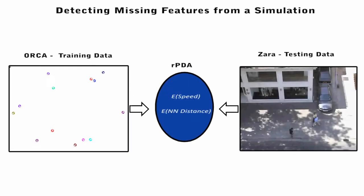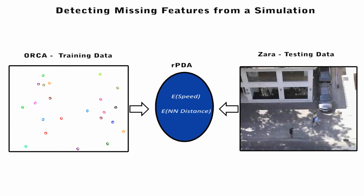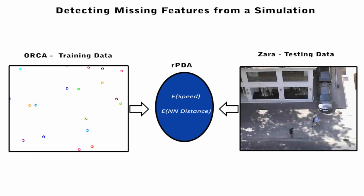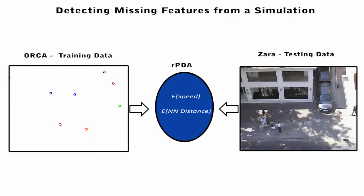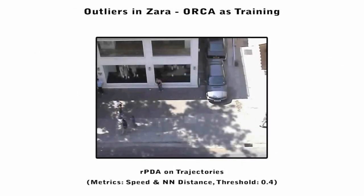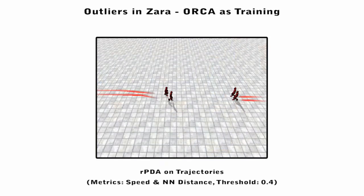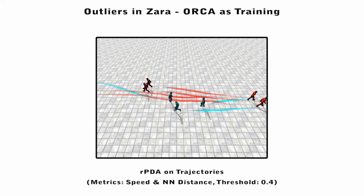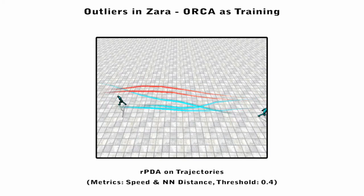We can apply our framework with multiple criteria simultaneously. Here, we use the simulation as training data and real pedestrians as testing data in order to highlight behaviors not captured in the simulation technique. When compared to an ORCA simulation, real humans who walk in groups are labeled as outliers, highlighted here in red. This highlights a facet of human behavior which ORCA simulation techniques fail to capture.